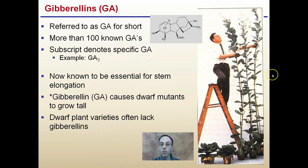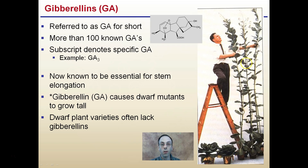We see a very classic picture here of some cabbage plants. Here are the normal cabbage plants, and here are ones that have been treated with GA — we see how tall they can get, how those internodes between those leaves can stretch to enormous heights compared to the normal.